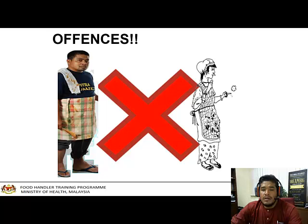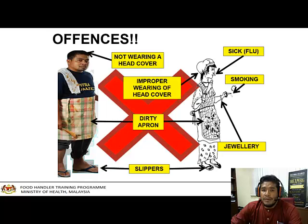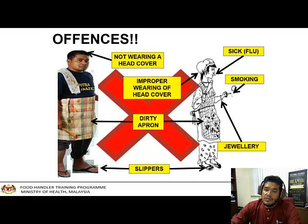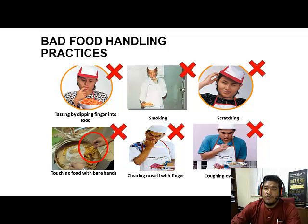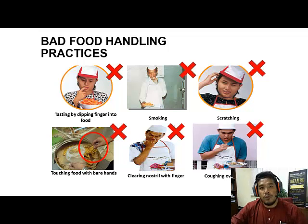Looking at the offenses picture, you can see food handlers looking dirty — having a runny nose, smoking, not wearing proper footwear, not wearing a head cover, or wearing it improperly. These are things that food handlers out there commonly do. After this lecture, I hope you can avoid these things. Bad food handler practices such as testing food by dipping your finger into it is a big no — always use two spoons to taste food instead.